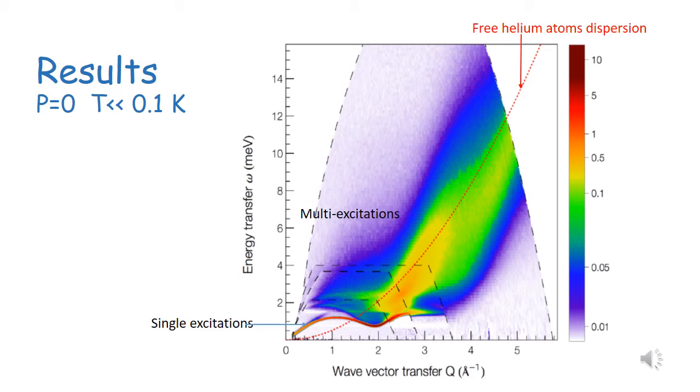Here we see the results of our measurements of the dynamic structure factor in all the wave vector and energy range. You can see at low energies, in the lower part of the graph, the famous phonon-roton dispersion curve of single excitations, and above, with much smaller intensity, the multi-excitations, which extend at higher energy until they reach the free helium atom dispersion. We have with this a complete map of the excitations of superfluid helium-4.